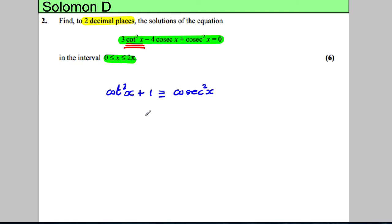I'm going to make cot squared the subject. So, I know that cot squared x is the same thing as cosec squared x take away 1. And now, I'm going to substitute it in. Going back to my equation, I'm going to have 3 cosec squared x subtract 1, subtract 4 cosec x plus cosec squared x is equal to 0.